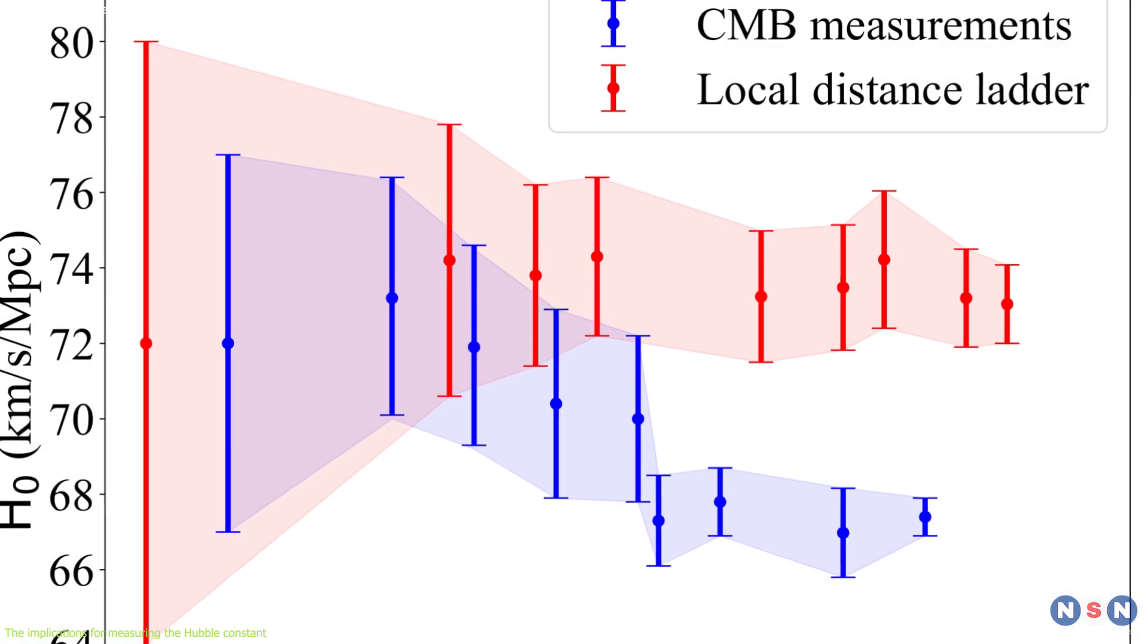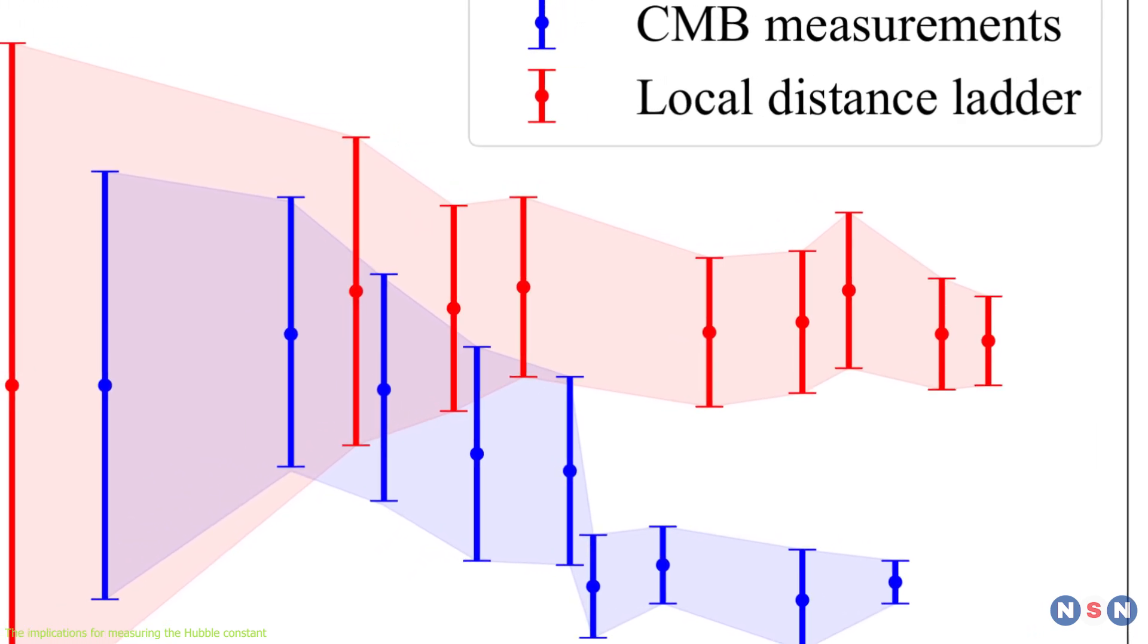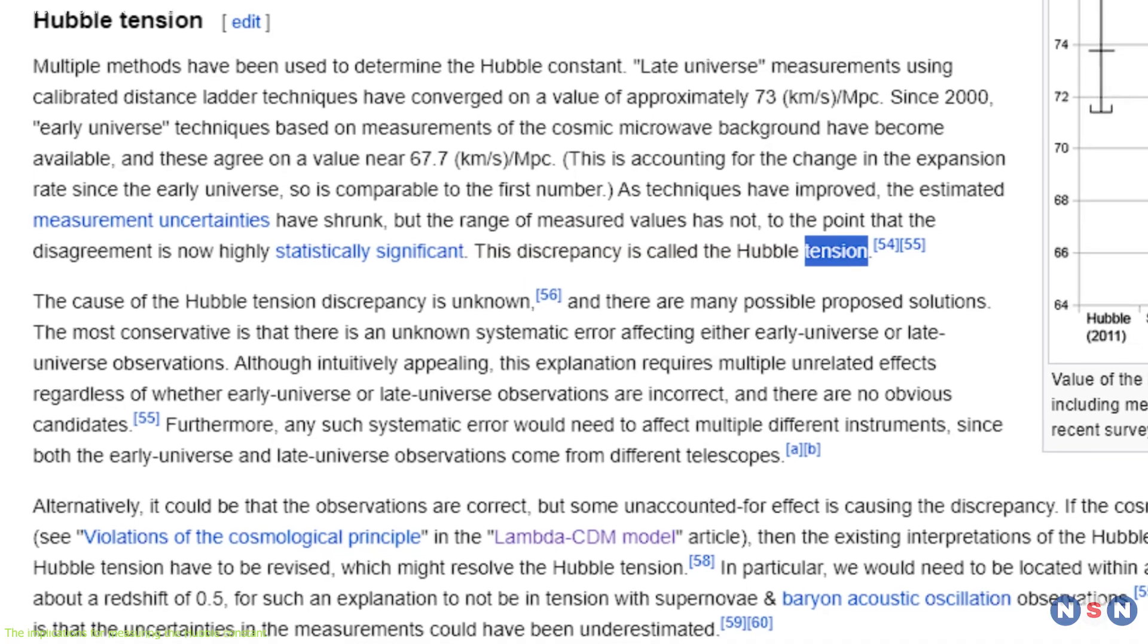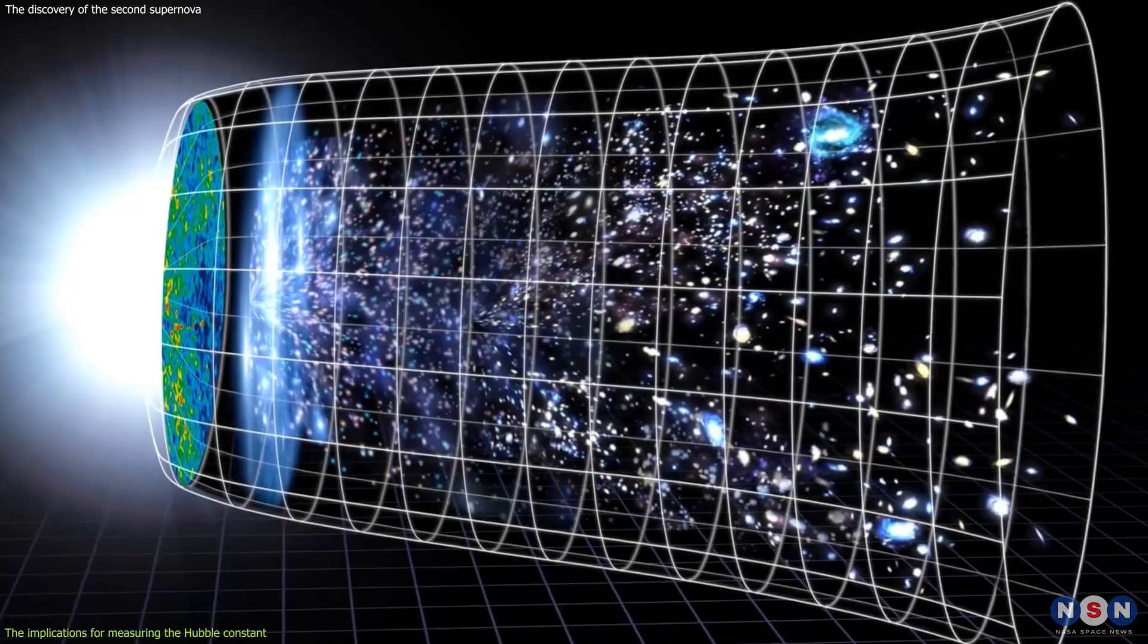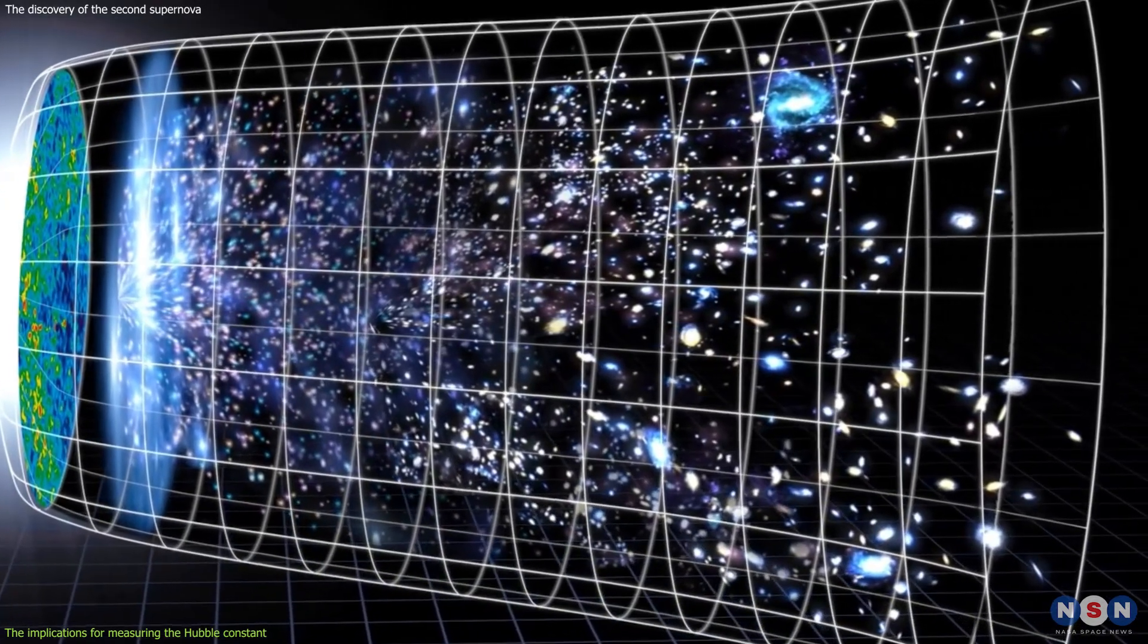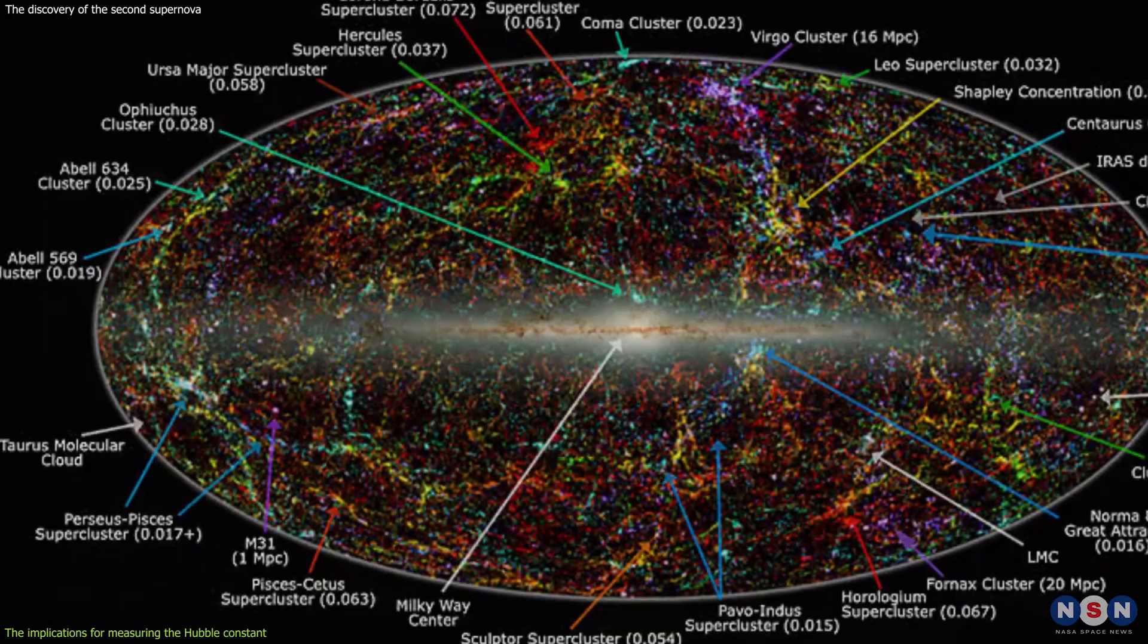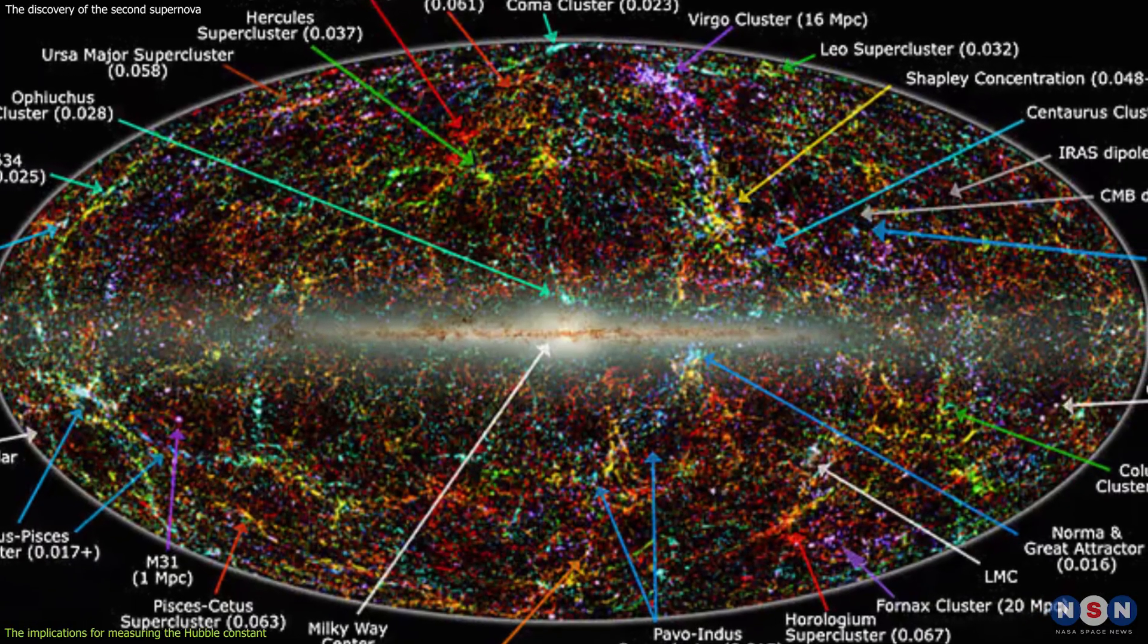However, there is a problem. Different methods of measuring the Hubble constant give different results, and they do not agree with each other. This is called the Hubble constant tension, and it poses a challenge for the standard model of cosmology, which is based on the assumption that the universe is homogeneous and isotropic, meaning that it looks the same in all directions and locations.